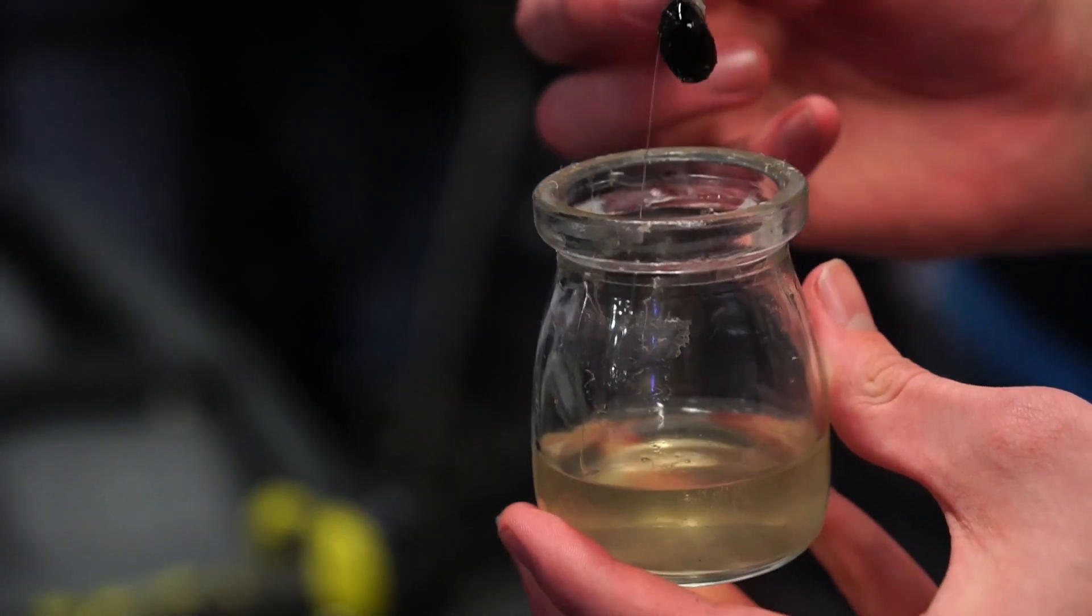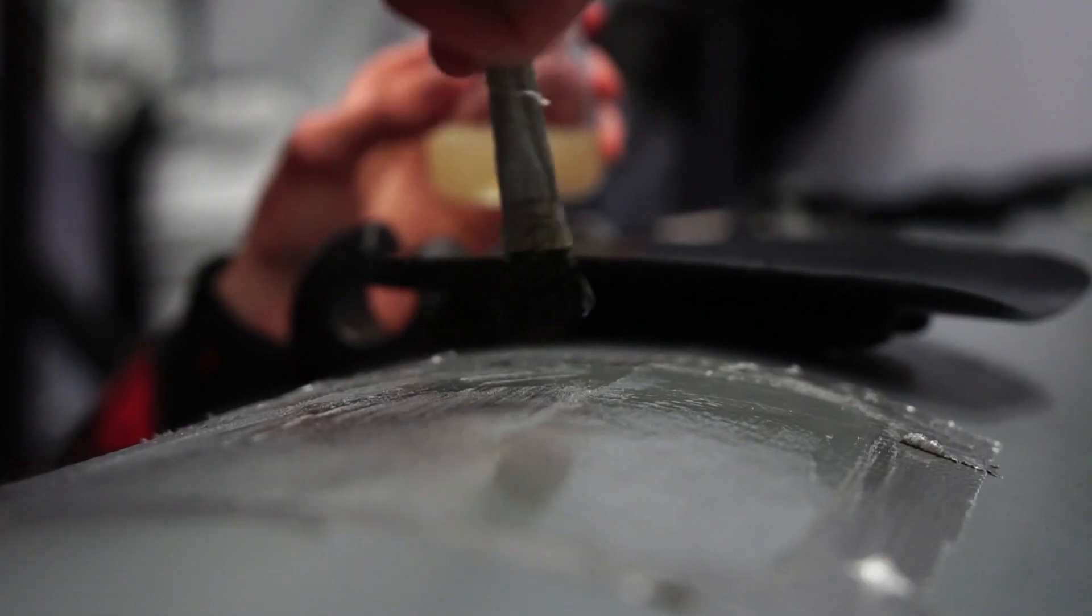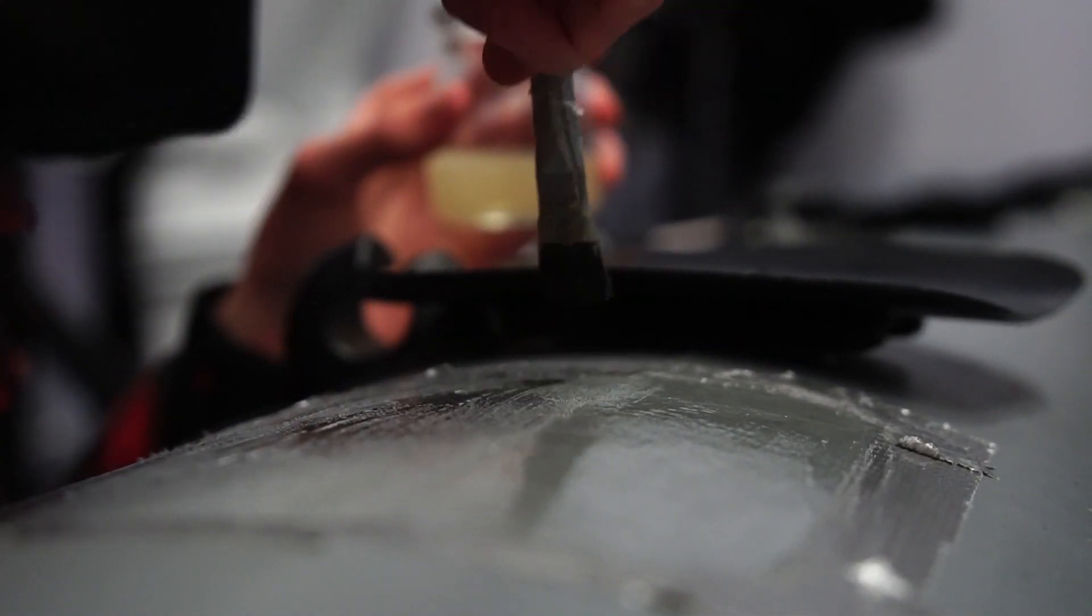For the second layer of adhesive, we're going to allow it to sit for about 5 to 10 minutes, again using the knuckle test to make sure that it's tacky enough to adhere without being dry.